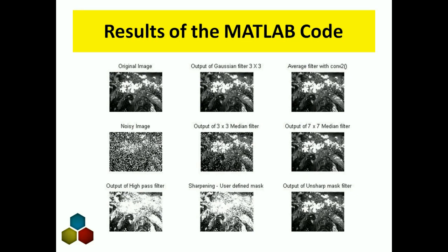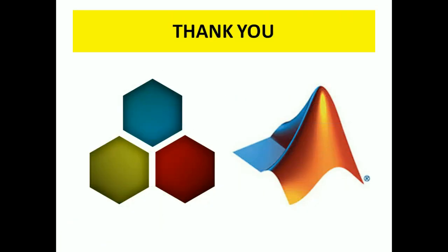So like this we apply different types of masks to the image: the 3x3 Gaussian filter mask, the average filter (low pass filter), salt and pepper noise, the 3x3 median filter mask, the 7x7 median filter mask, a high pass filter, sharpening, and the unsharp mask filter. These are the outputs for this original image by applying different types of filters. Thank you very much for watching this video. To watch more videos, please subscribe to my channel OpenBox Education.